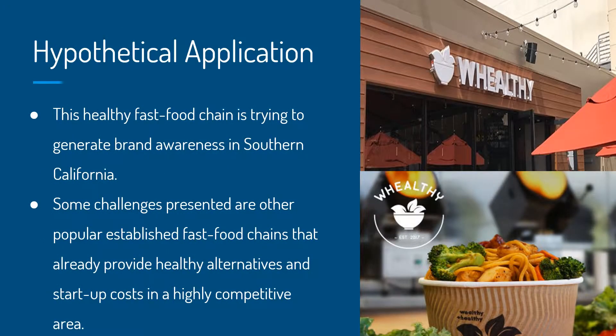The company we used as a hypothetical example to apply our brand choice is called Wheatly. Wheatly is a fast food chain located in Southern California that offers healthy food where you can create your own plate and bowl. The market for healthy food is booming and Wheatly has a lot of competition, as there are other popular established fast food chains that offer healthy food. For that reason, Wheatly wants to generate brand awareness in Southern California to be successful in this highly competitive area and become more profitable to offset the high startup costs they incur.